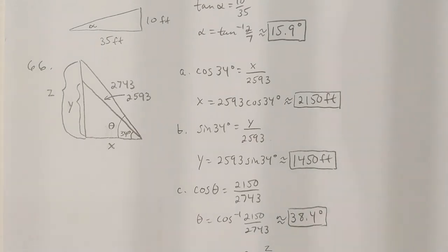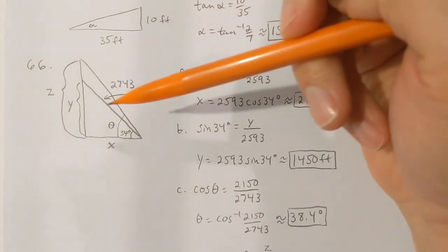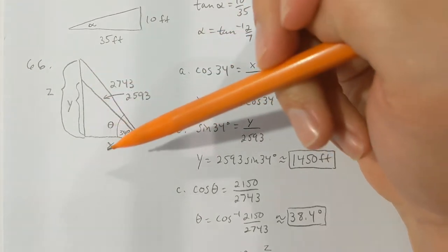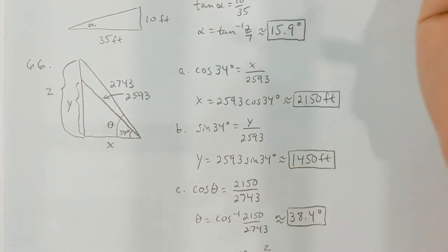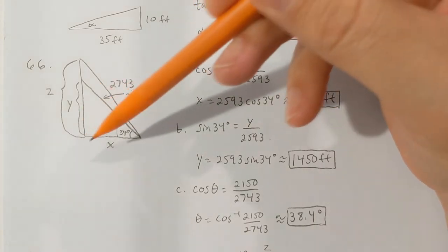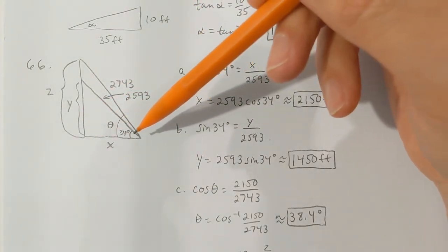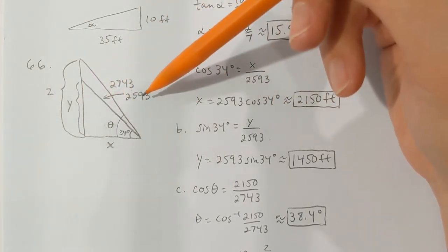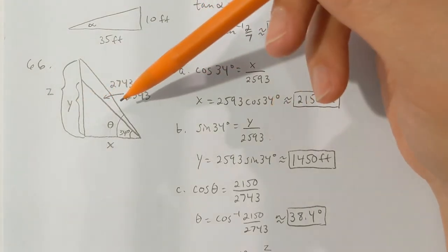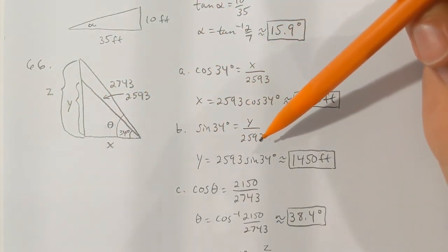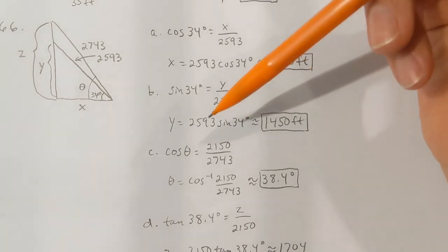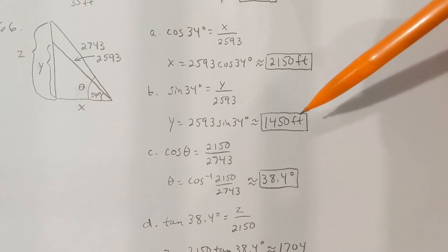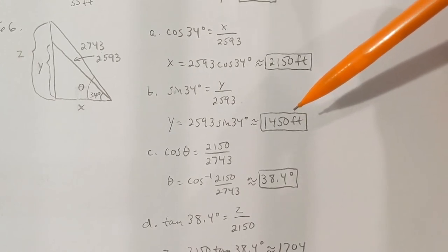Part B: how tall is the building (excluding the antenna)? I call that y. Opposite over hypotenuse uses sine: sin(34°) = y/2,593. Solving for y, I get y ≈ 1,450 feet. That's the height of the building.